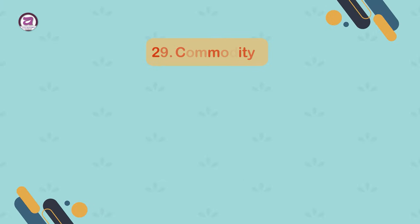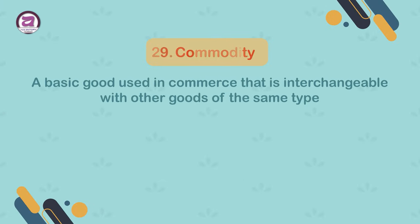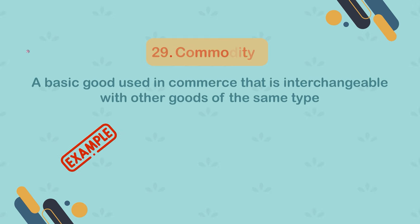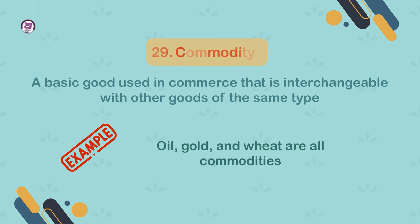29. Commodity. A basic good used in commerce that is interchangeable with other goods of the same type. Example: oil, gold and wheat are all commodities.